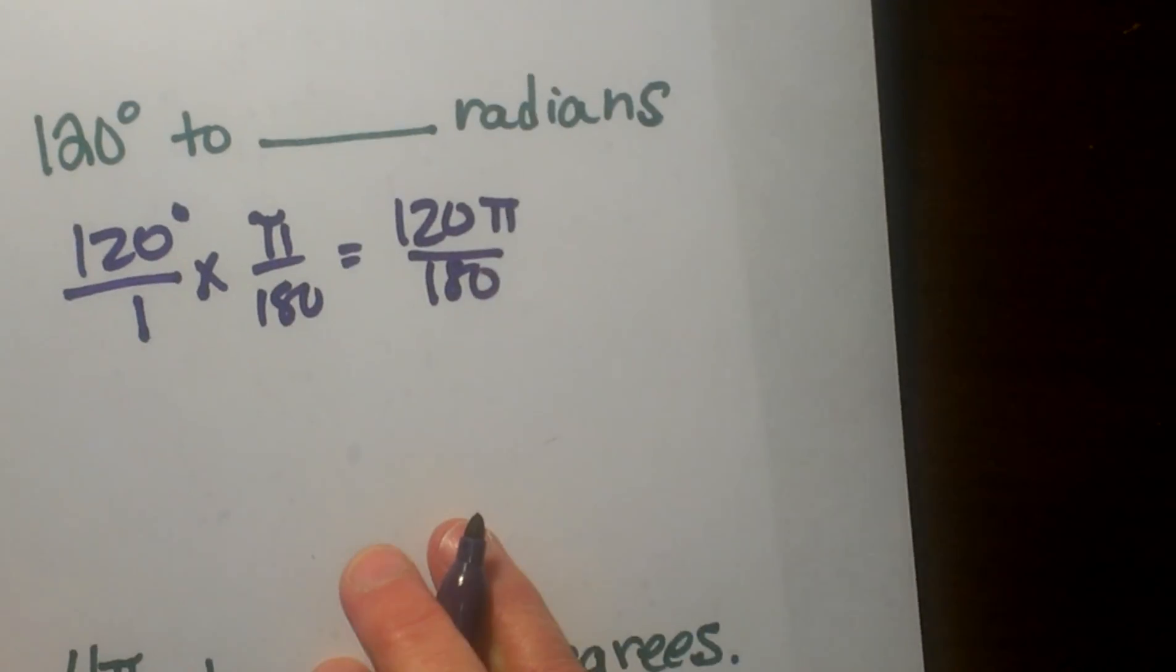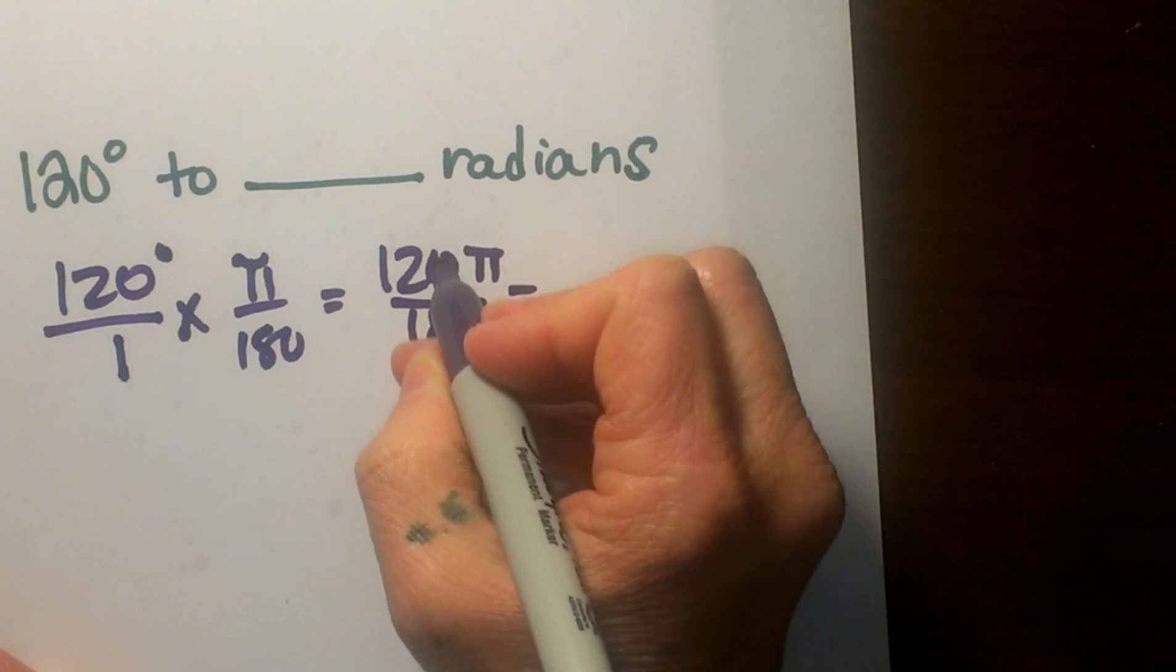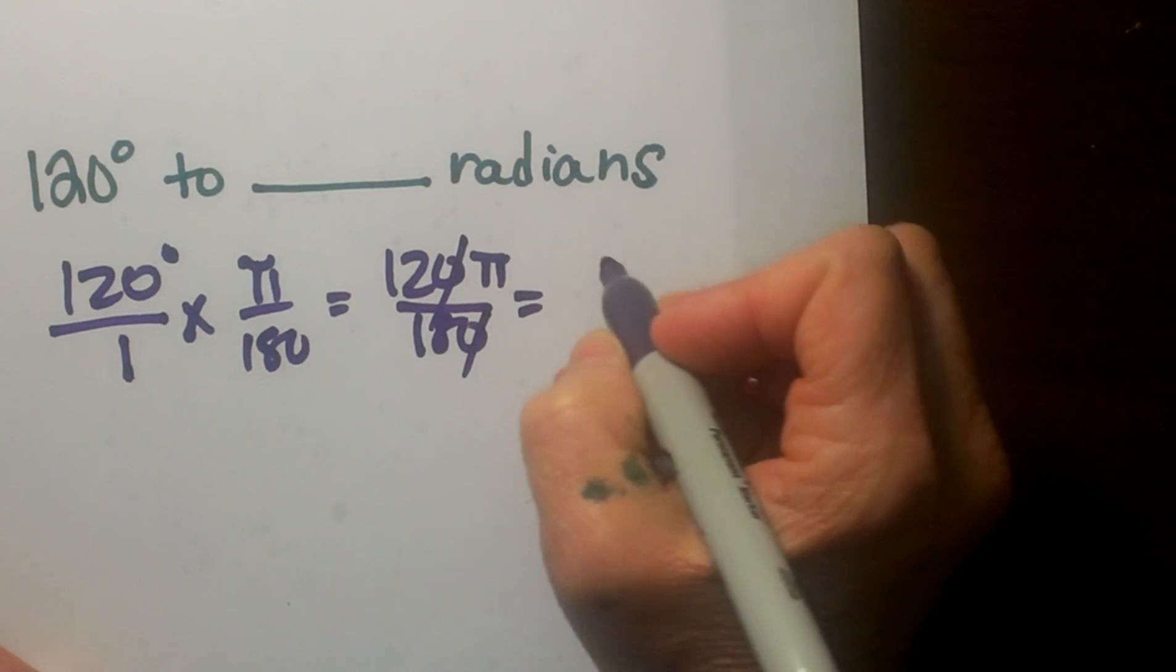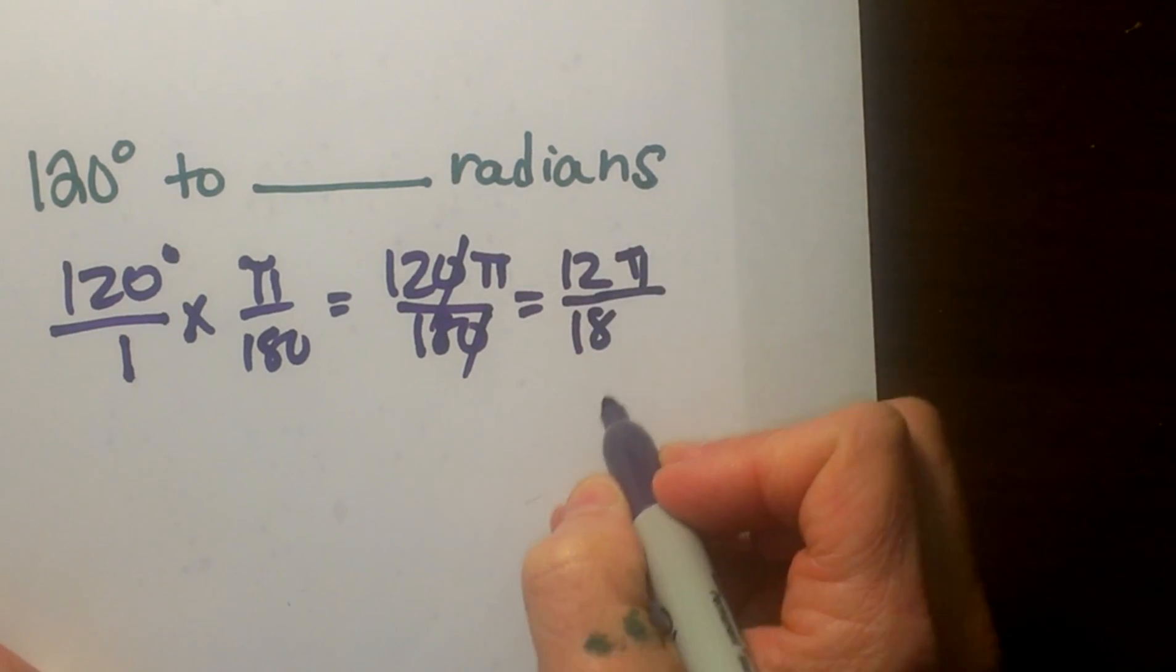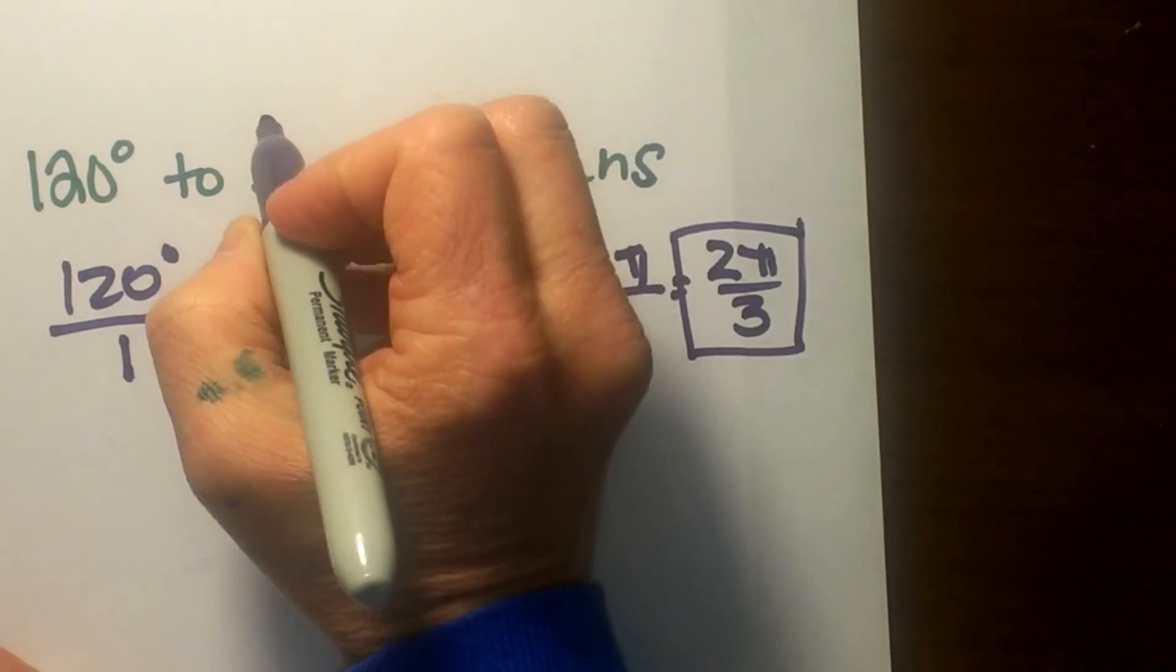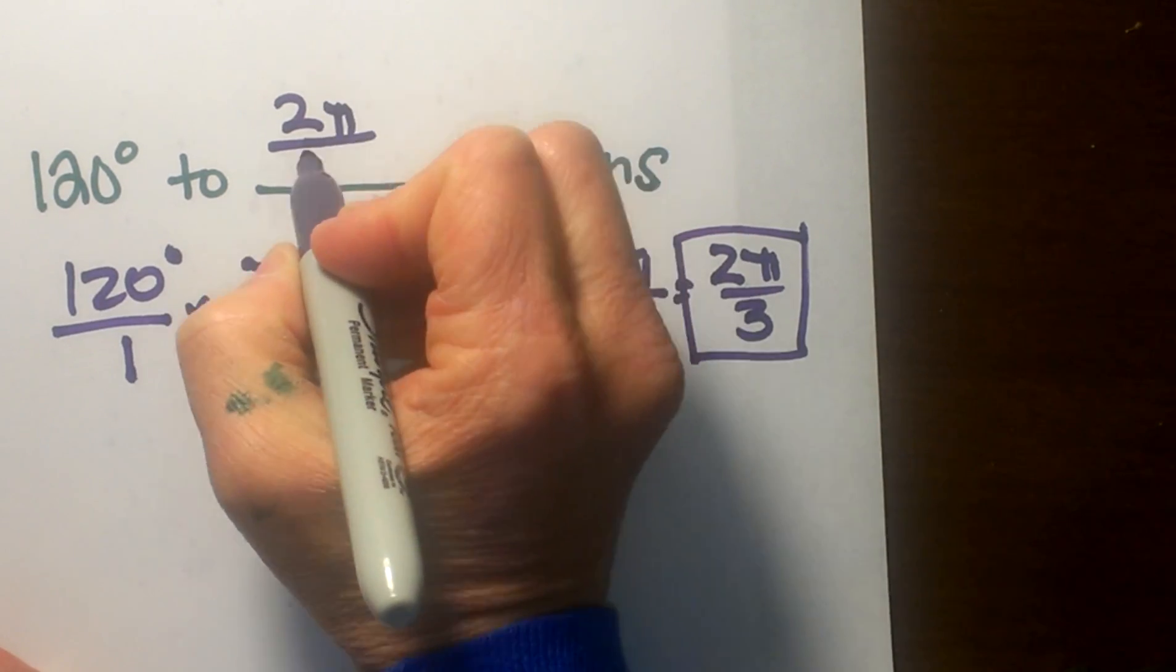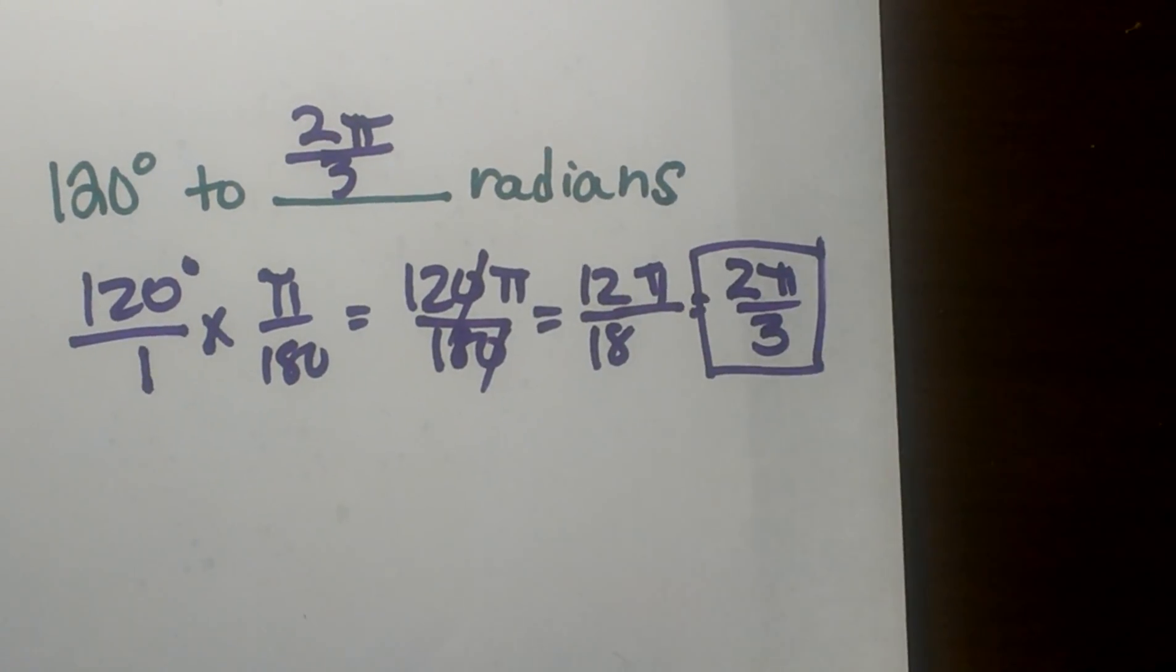So that's 120π over 180. Now that's the answer, but I need to reduce it. I know that we can divide by 10 very easily by just canceling the zeros out, so that leaves me 12π over 18. Now I can divide by 6, so that's going to give me 2π over 3, and that is my answer in radians. That's 2π/3, or two-thirds π if you want to write it like that.